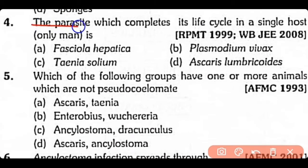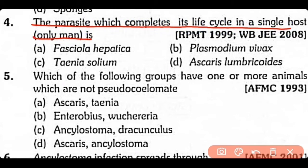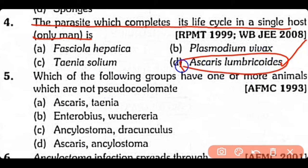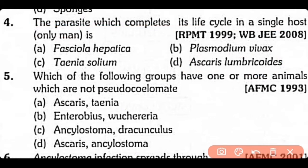Question 4: The parasite which completes its life cycle in a single host only — man — is: (A) Fasciola hepatica, (B) Plasmodium vivax, (C) Taenia solium, (D) Ascaris lumbricoides. The correct answer is Option D. Ascaris lumbricoides is monogenetic and completes its life cycle in humans.